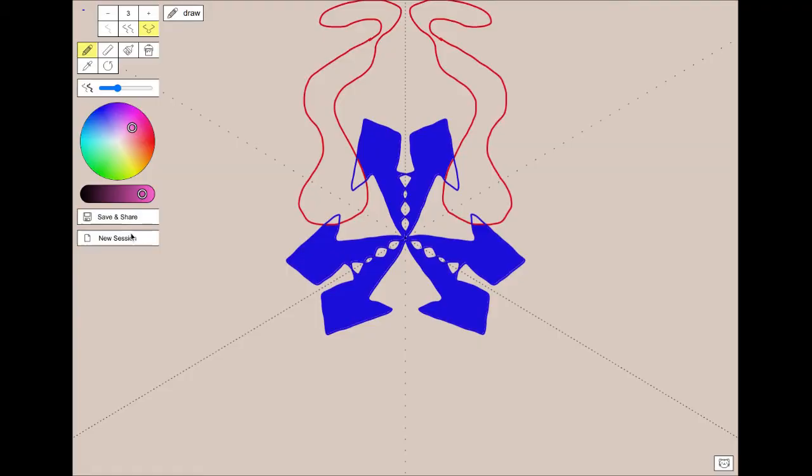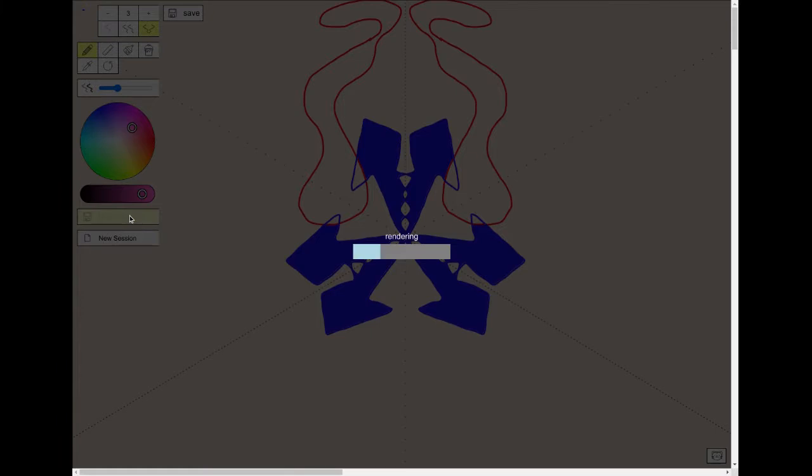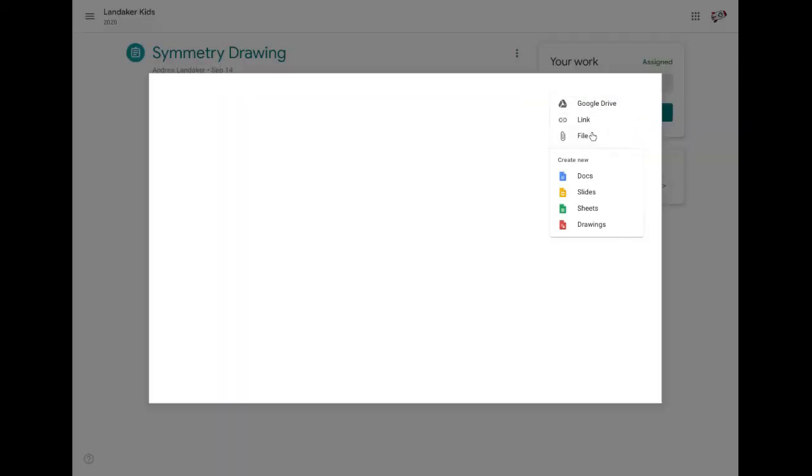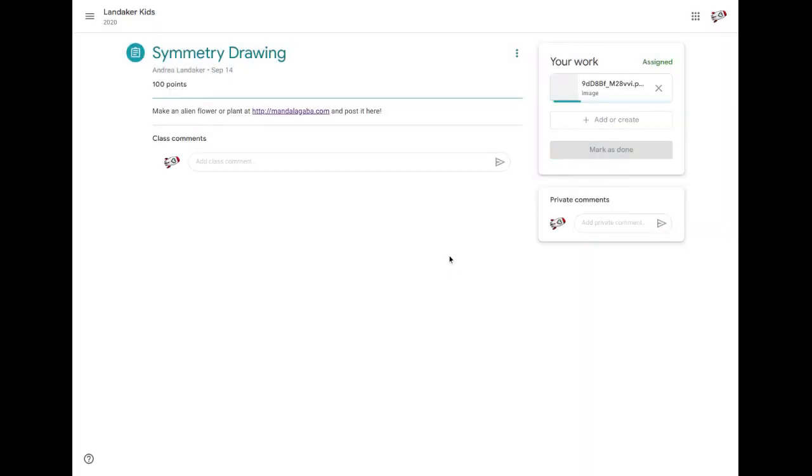When you're done use the save and share button. It'll turn your drawing into an image and then you can click on the link to save it to your Chromebook. Then on Google Classroom you can add a file, go to upload, and then recent files. That's how you upload your alien flower or creature to share with your class.